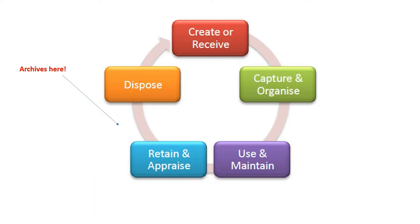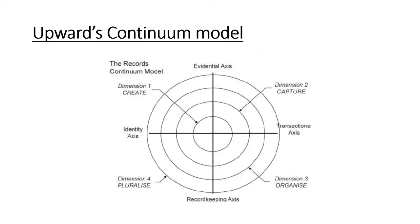One popular model is the records life cycle model, which indicates a fairly simple path that records take from creation through to either long-term preservation or disposal. The vast majority of records are eventually disposed of — ideally properly. This model is very linear, easy to follow, and clear. However, for some people it is far too rigid and simple. There may be cases where it's not clear if a record has archival value — for instance, the historic deeds of a house may be seen to have both primary and secondary value.